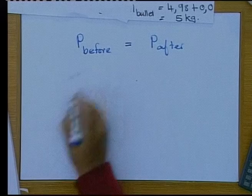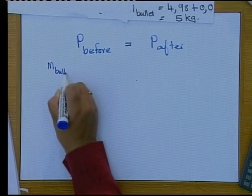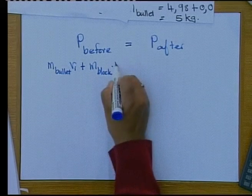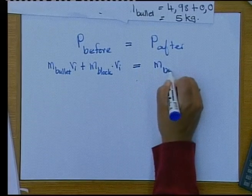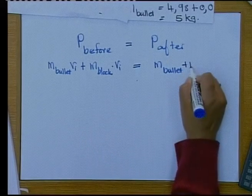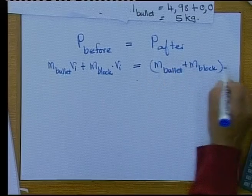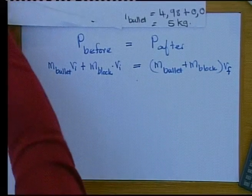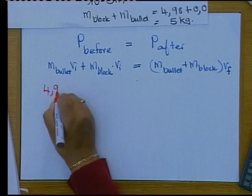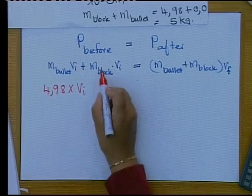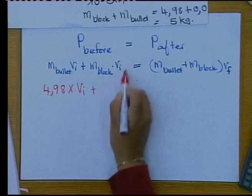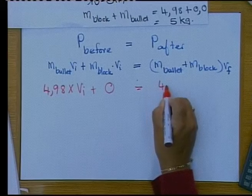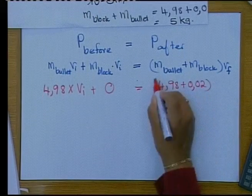For conservation of momentum, p before equals the mass of the bullet times the velocity of the bullet, plus the mass of the block times the velocity of the block. That equals the combined mass of bullet and block times the final velocity. Since the block is stationary, that whole section is 0.